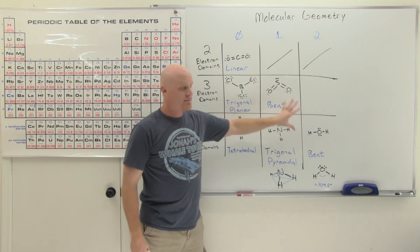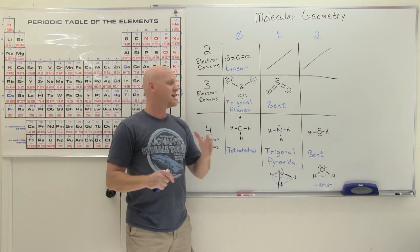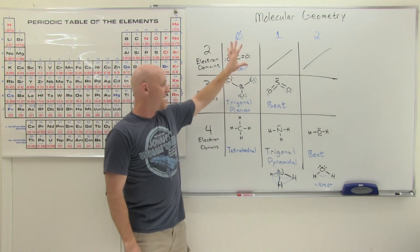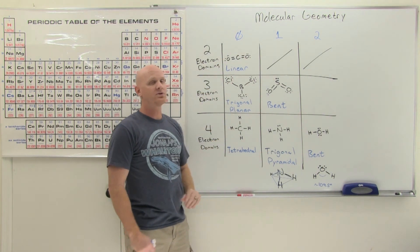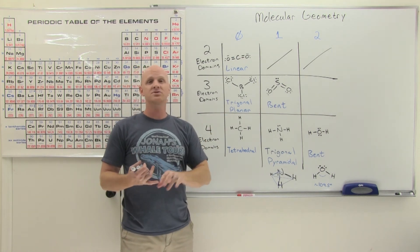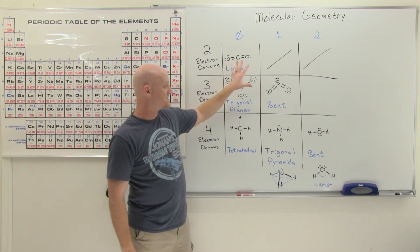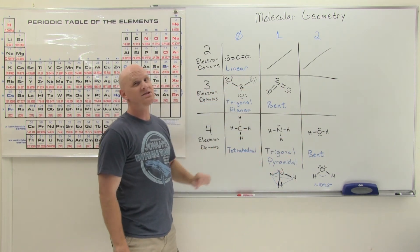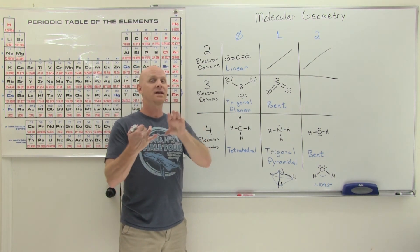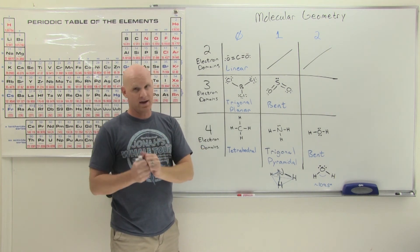These are the fundamental molecular geometries you need to understand. A typical high school class won't cover five or six electron domains, but you definitely need to memorize these geometries. Given any particular molecule, you should be able to predict its electron domain geometry, its molecular geometry, and its bond angles.